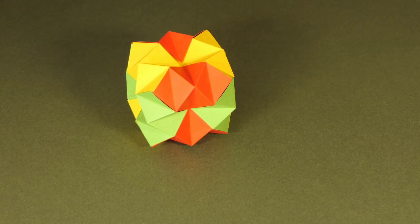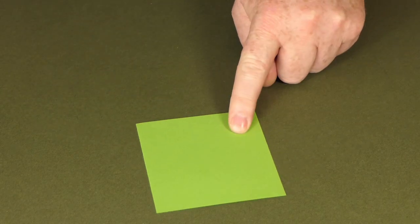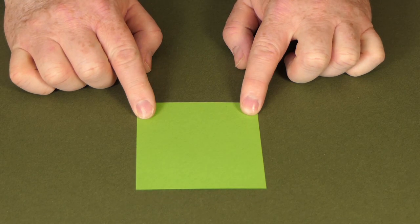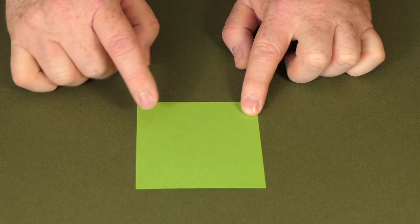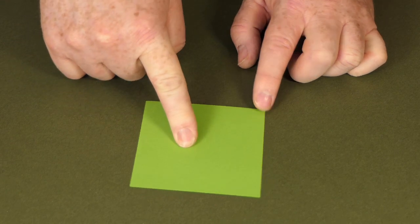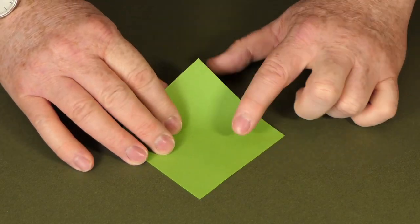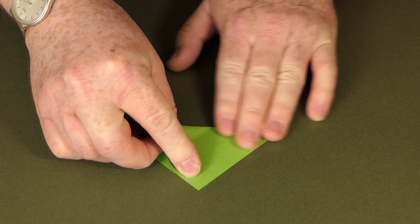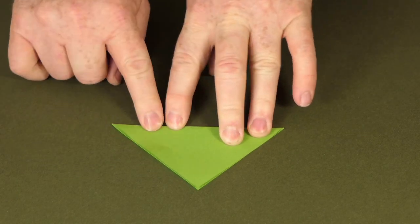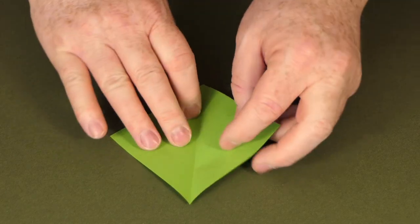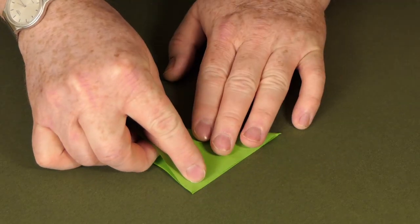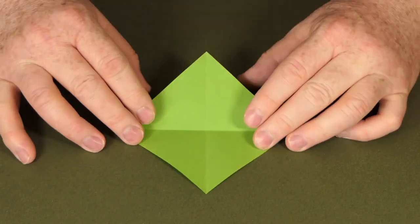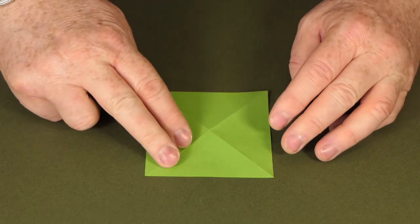So I'm going to start folding one of these. I'm going to have a green square of paper and here we go. If this was paper that had a white side to it then this would be white side up, so initially I'm going to fold on the white side and fold diagonally both ways.